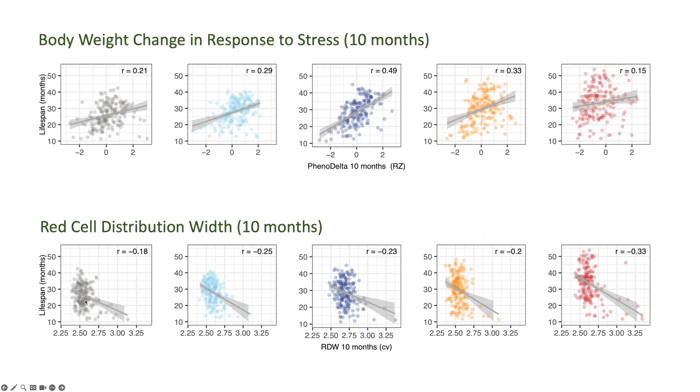Mice with high RDW, lifespan on the y-axis, RDW x-axis, mice with high RDW are almost assuredly having shorter lifespans. There are mice who die with low RDW, but mice with high RDW, one exception. This could be a mistake, but high RDW is an indicator of mortality.